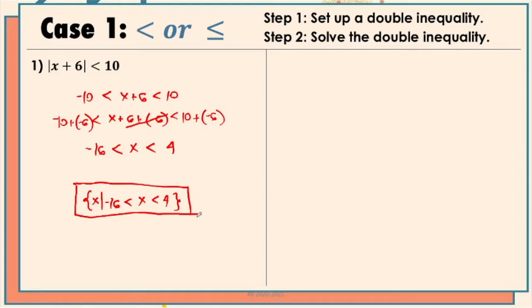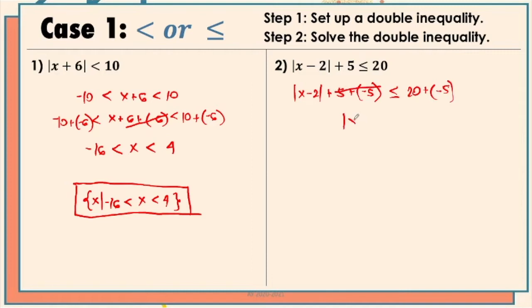Now let's have the second example. In this one, we have to make sure first that the absolute value is isolated on one side, so we have to remove the positive 5. We do that by adding negative 5 to both sides, giving us the absolute value of x minus 2 is less than or equal to positive 15. This is what we're going to use for steps 1 and 2.